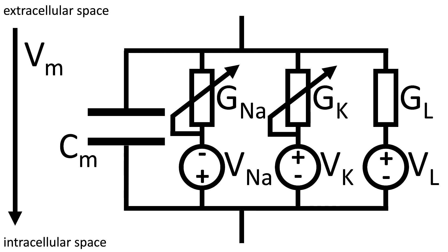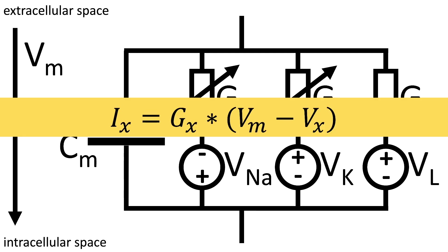Using Ohm's law, we find that the current for a single channel is given by its conductance multiplied with the potential deviation from the Nernst potential.